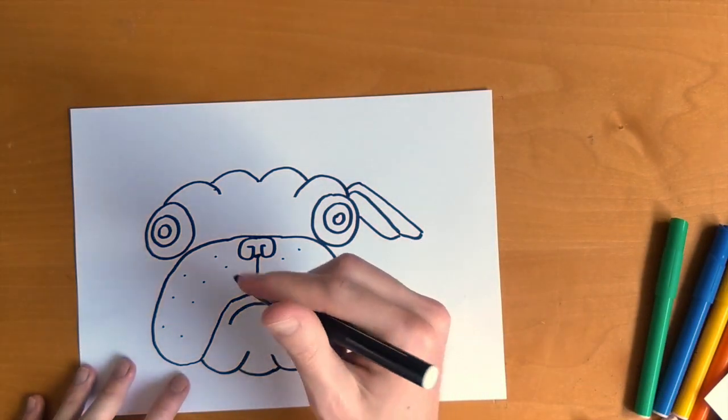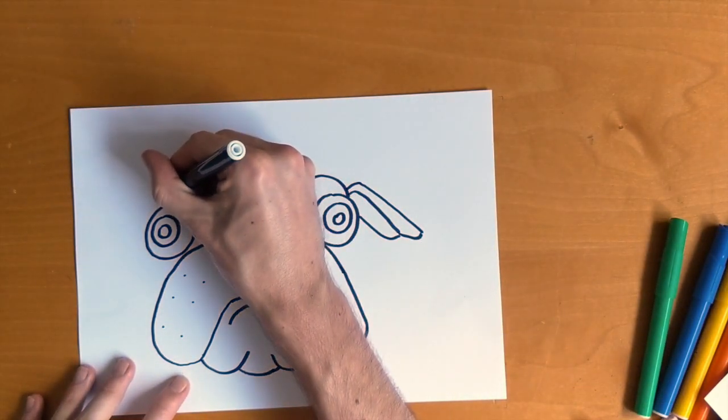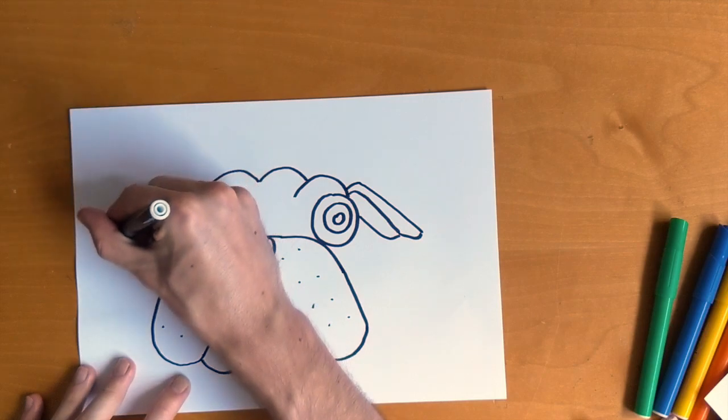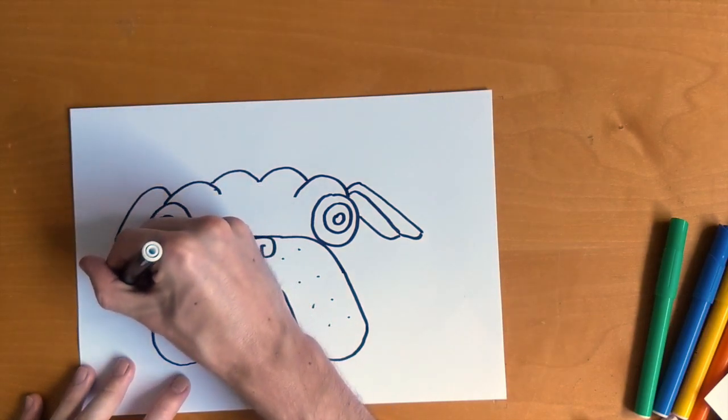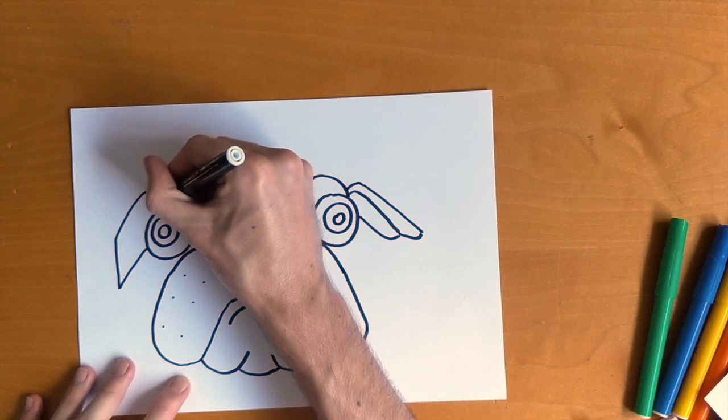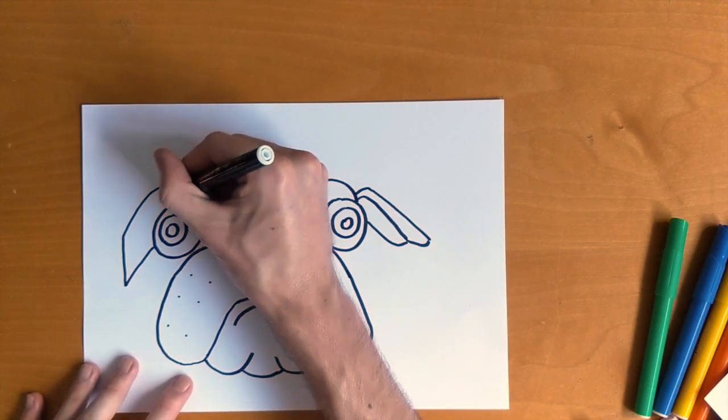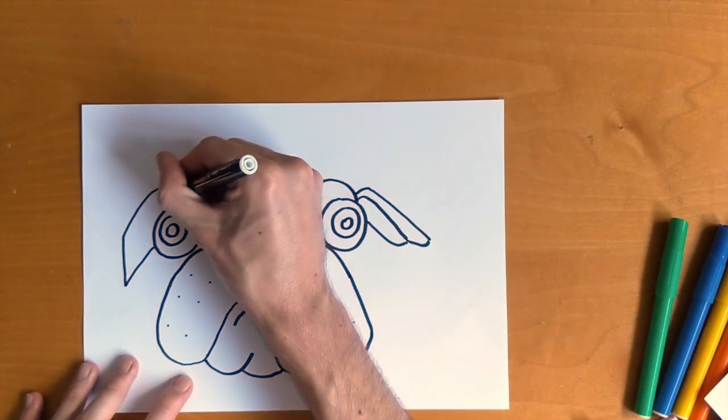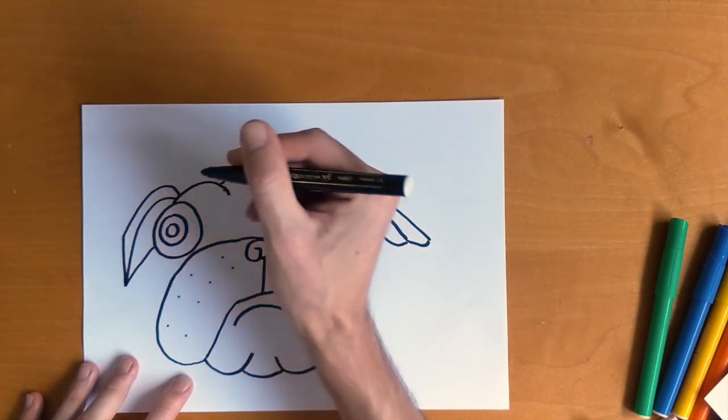Now go to his other side of his head to do his other ear, so we're going to curve around. This one's a bit sharper and has a pointy ear. Then we're going to do the same thing—a curved line which we'll color in later in black.